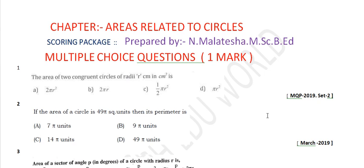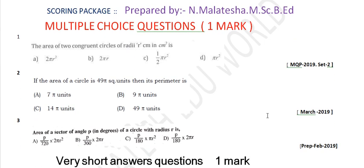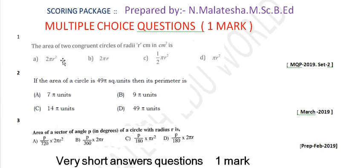Multiple choice questions, 1 mark type. The area of two congruent circles of radii r centimetres in centimetre square is: (a) 2πr², (b) 2πr, (c) πr². This is from model question paper 2019 set 2. The sum of the area of two congruent circles with radii r — the first option, 2πr², is the right answer.